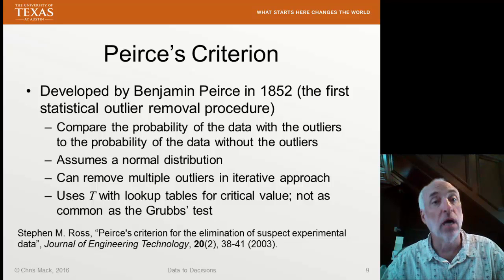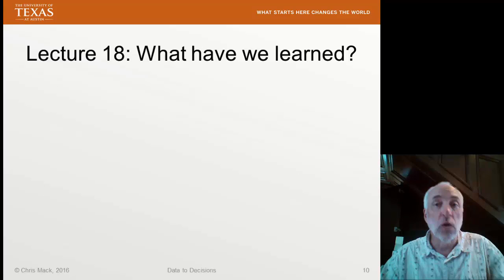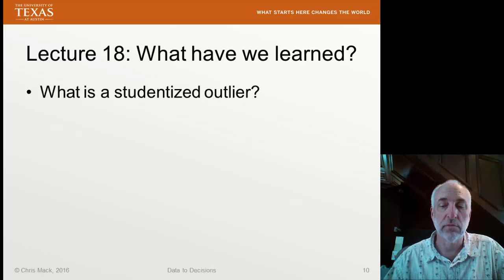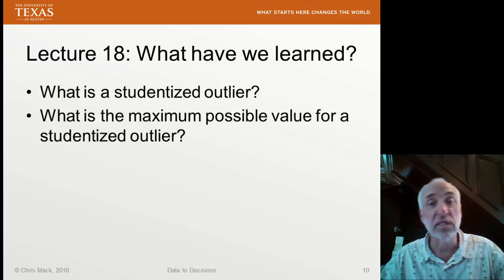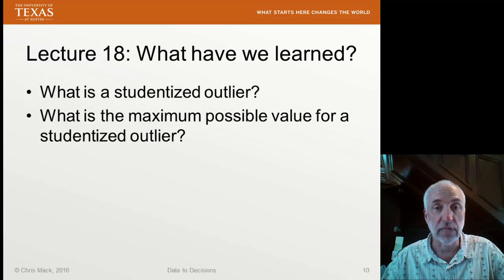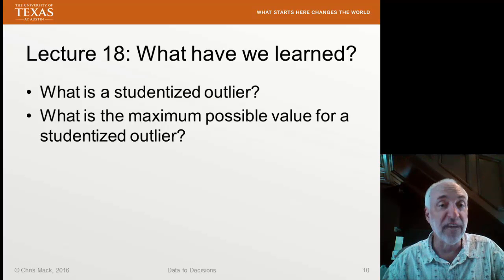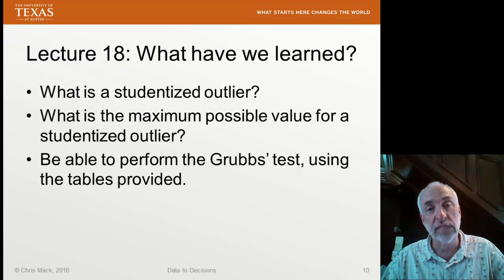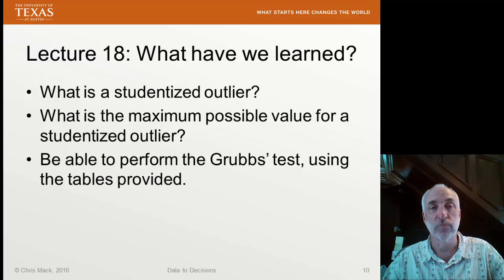That's our second lecture on testing and identifying outliers. What have we learned? First, what is a studentized outlier. Second, what is the maximum possible value for a studentized outlier given value n, the number of data points. And finally, we should be able to perform the Grubbs test on a single data point or on two data points using the tables provided. That's Lecture 18. Next time, I'll have some final thoughts on outliers.